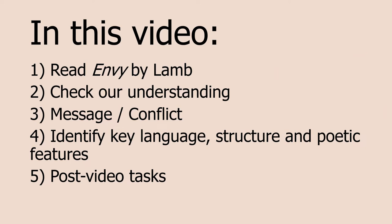We'll tackle this poem in five steps. Firstly, we will read Envy by Lamb. Secondly, we'll check our understanding of the poem, going through it stanza by stanza. Thirdly, we'll identify the poem's key message and the areas of conflict within the poem. The reason we're focusing on conflict is that Envy by Lamb is found in the conflict section of our poetry anthology for GCSE. Fourthly, I'll identify some key language, structure, and poetic methods that Lamb uses in the poem. And finally, I'll leave you with a few tasks you can complete after the video to really solidify your understanding of this poem.